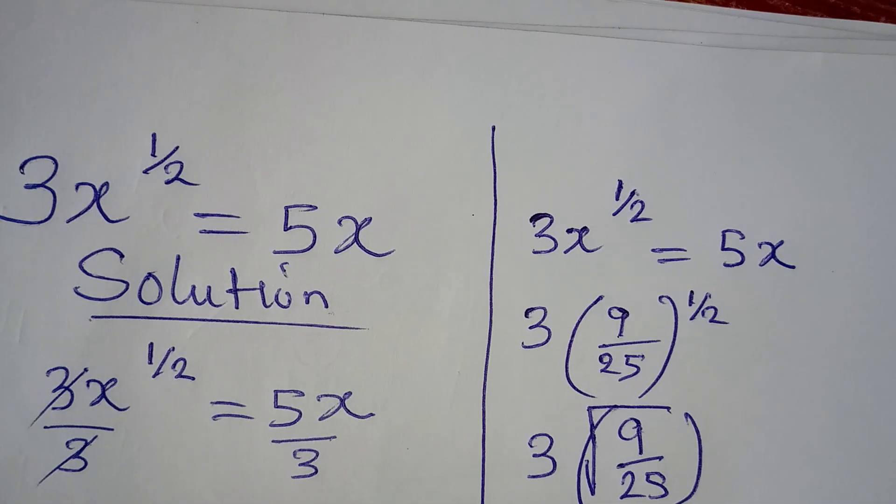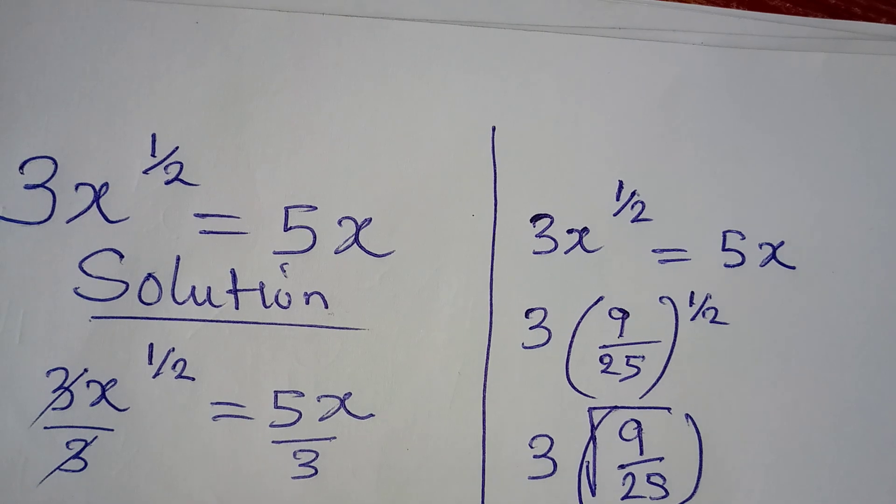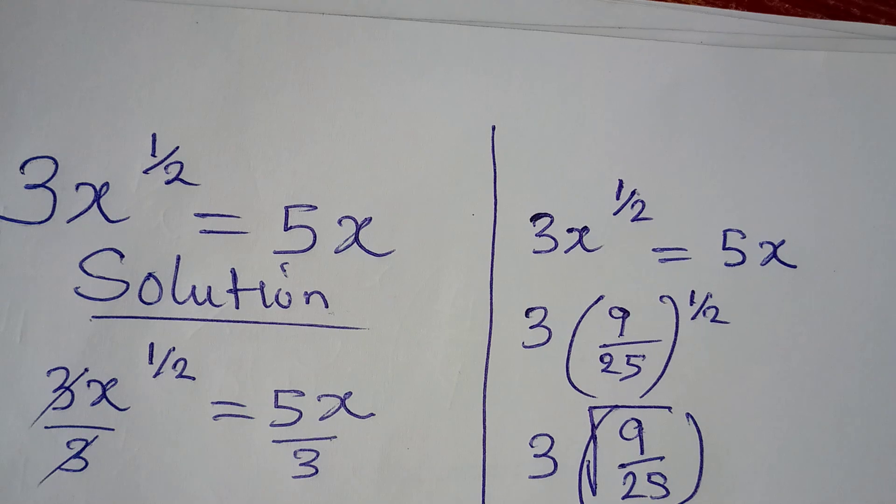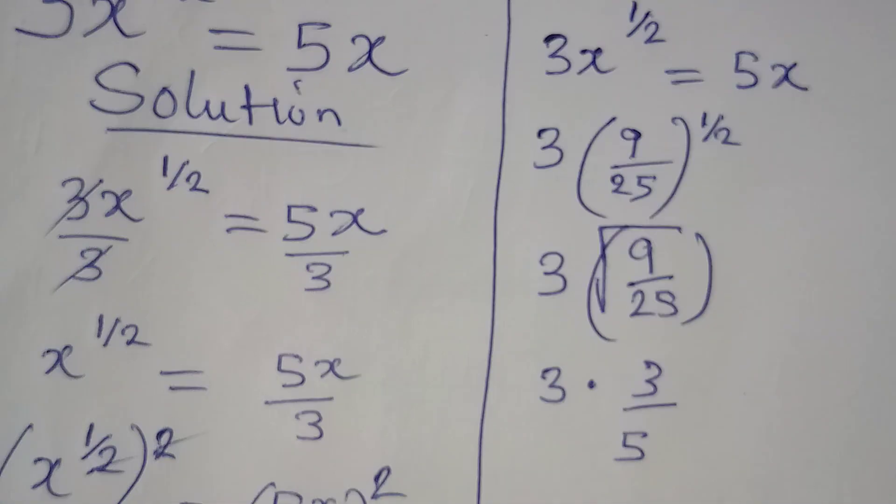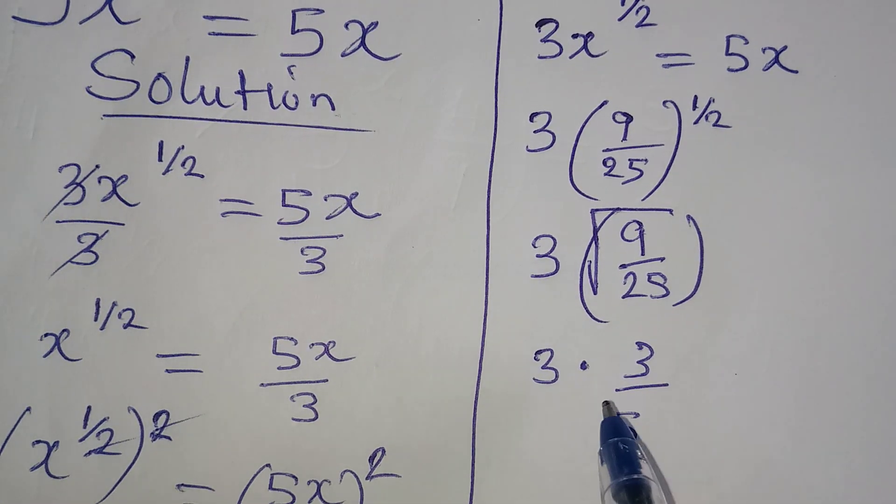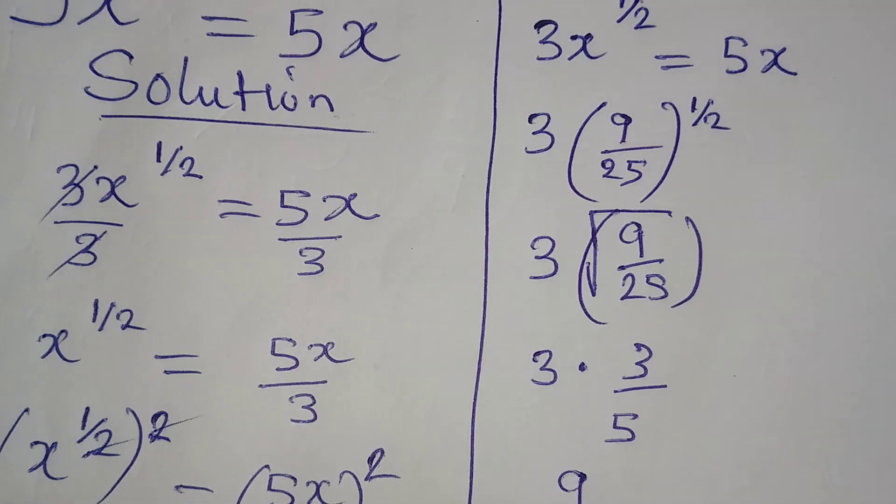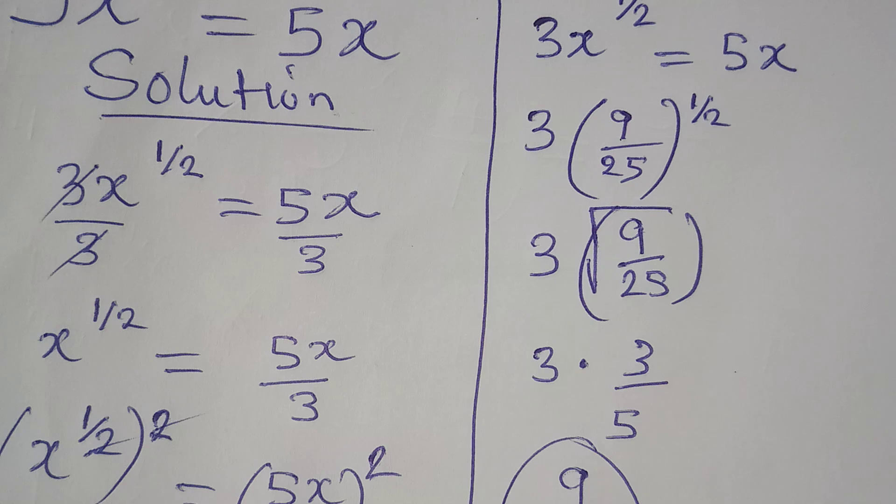And that would be 3 multiplied by square root of 9 is 3. And then square root of 25 is 5. And then when we work this, it's going to be 3 times 3, which will give 9 all over 5. So the left-hand side is 9 over 5.